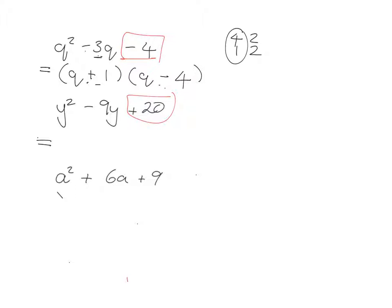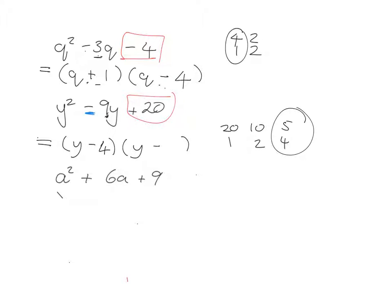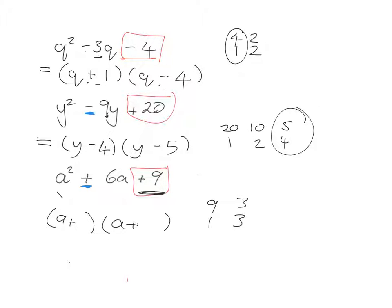The next one has a plus 20, so that tells me I have both signs in the brackets being the same, and because there's a negative middle term I can see they both have to be negative. Obviously I've got y's. The 20 means the lasts multiply to give 20, so the factors are 1 times 20, 2 times 10, and 4 times 5. They've got to add up to give me the 9, so it's 4 and 5. And the last one: a plus at the end tells me the same sign in both brackets, and because there's a plus middle term I know they're both plus. The lasts must multiply to give 9: factors are 1 times 9 and 3 times 3. These must add up to 6, so obviously it's 3 and 3. And if I want to be neat, I can write that as x plus 3 squared.